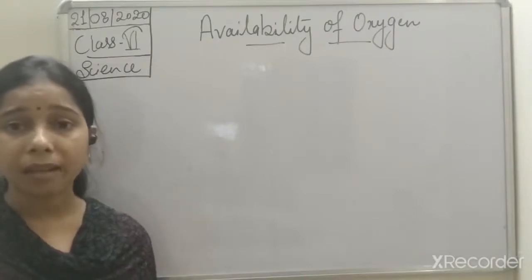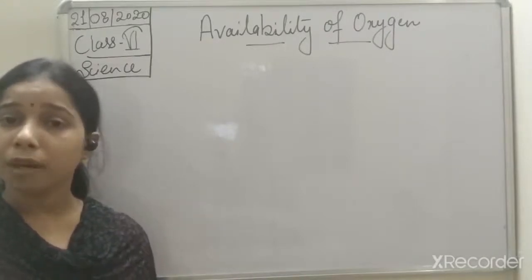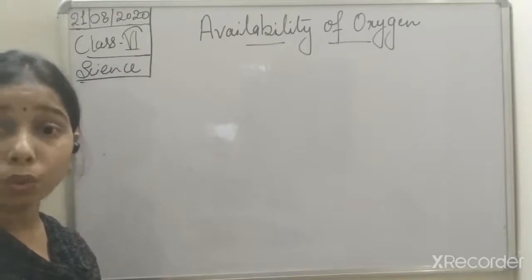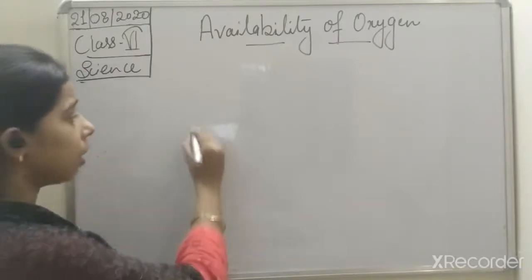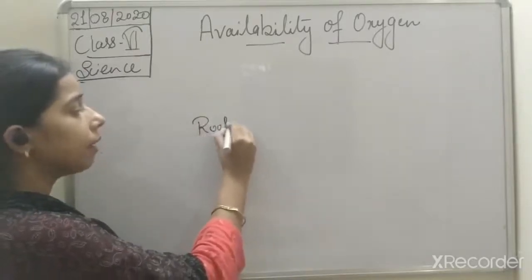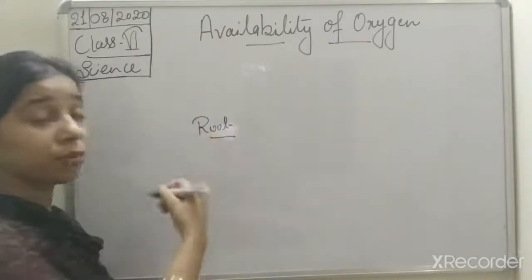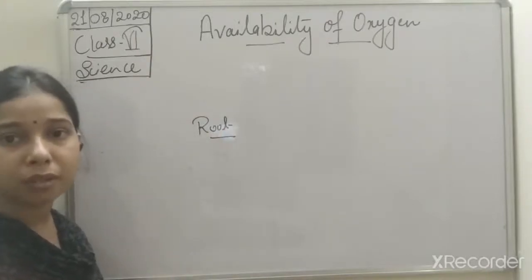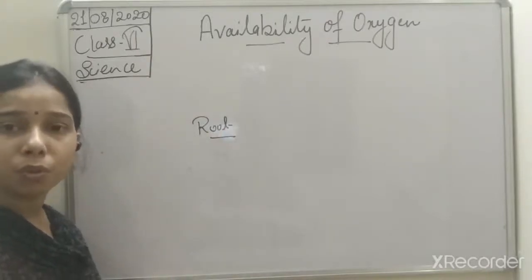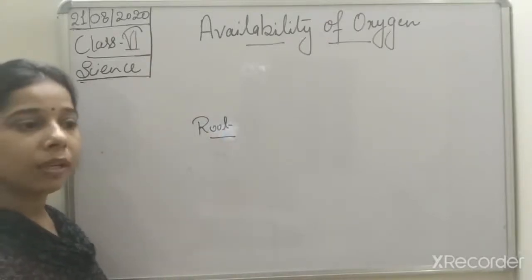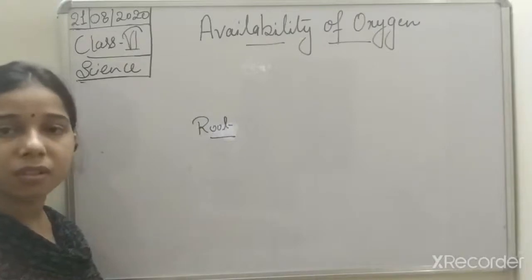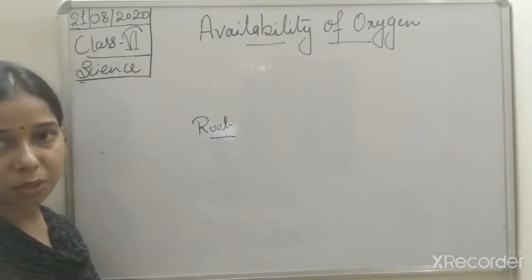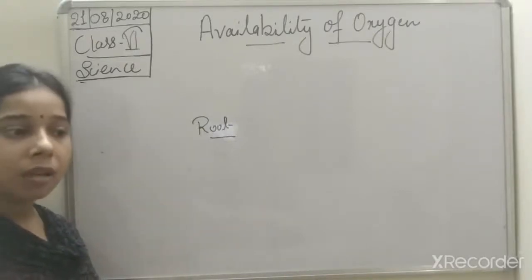What about the plants? One part of the plant called the root also needs to respire, and for respiration, the root takes oxygen from the air present in between the soil particles.